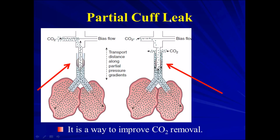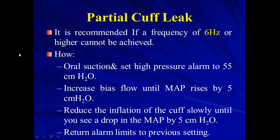There is a technique called partial cuff leak. We use it sometimes to improve CO2 removal. We deflate the cuff a little bit to cause some leak around it, which helps eliminate CO2 in refractory hypercapnia on high frequency. It is recommended when a frequency of 6 Hz or higher cannot be achieved and the patient remains hypercapnic. To do it: start oral suctioning, set the higher pressure alarm to 55 cm of water, increase the bias flow until mean airway pressure increases by 5 (e.g., from 30 to 35), then slowly reduce cuff inflation until mean airway pressure decreases by 5 back to baseline. Then return alarm limits to previous settings.